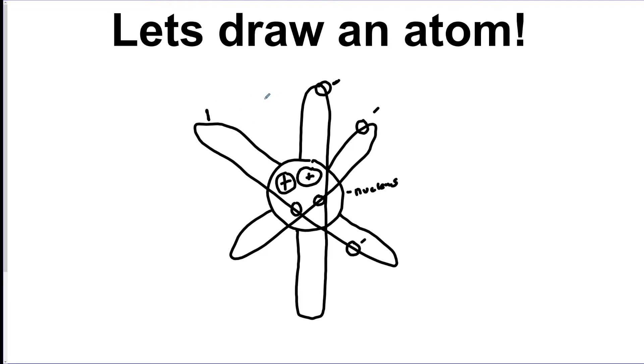These lines that I drew—these circles—are the pathways that the electrons fly around. They have different names: they can be called electron shell, they can be called an orbital, or they can be called an energy level. They all mean the same thing. It's the pathway that the electron flies around.